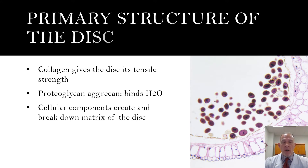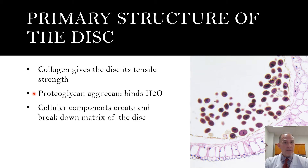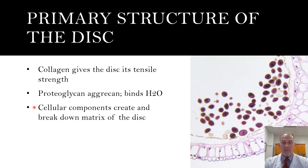The primary structural components of the disc are as follows. We have collagen, which provides the disc its tensile strength. We have proteoglycan aggrecan, which draws water into the disc, and proteoglycan is produced in the healthy nucleus — it is not produced in the injured nucleus. That's very important to remember. The cellular components of the disc create and break down the matrix and substance of the disc.